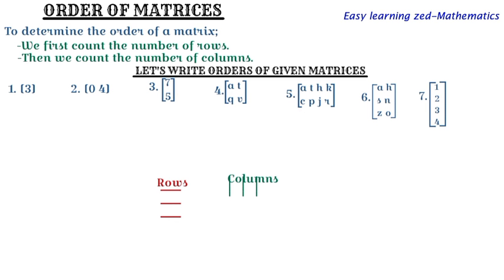Let's start with number one, where a matrix has just one element which is three. When you focus on the lines going horizontally, there is only one row. When counting lines going downwards, there is also just one column. So the order of this matrix is one by one — it has one row and one column.